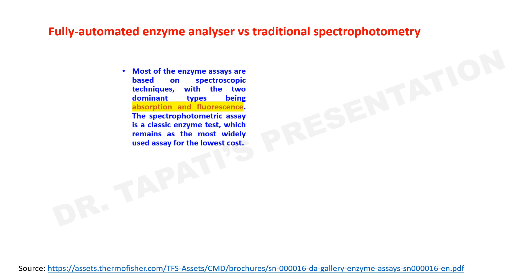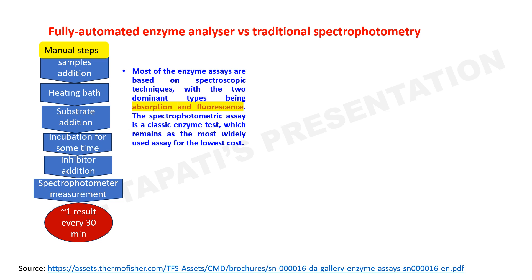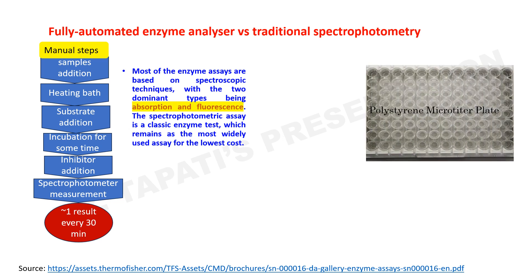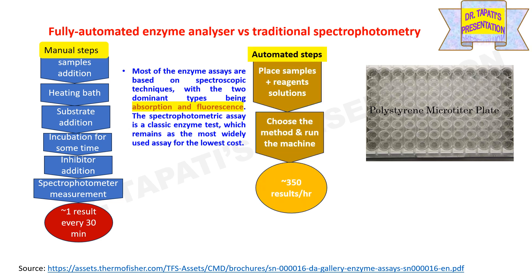Most enzyme assays are based on spectrophotometric techniques, with the two dominant types being absorption and fluorescence. The spectrophotometric assay is a classical enzymatic test which remains the most widely used assay for the lowest cost. All the steps involved are manual and lead to inconsistent results; this method is suitable when analyzing a few samples. Enzyme assays based on photometry and fluorometry in multi-well microplate format offer a high throughput alternative. Nowadays, fully automated enzyme assay systems are available which can efficiently manage various enzymes and measuring conditions in a single instrument, offering consistent and reliable performance.